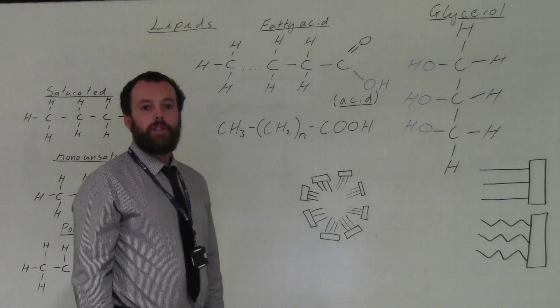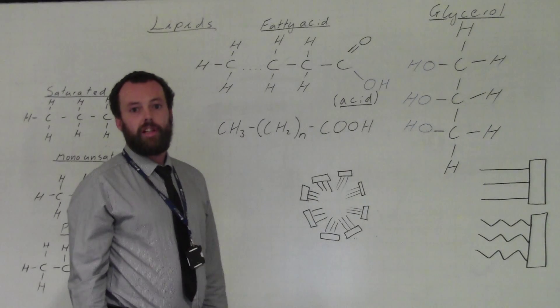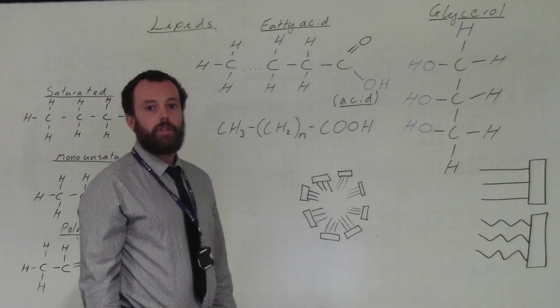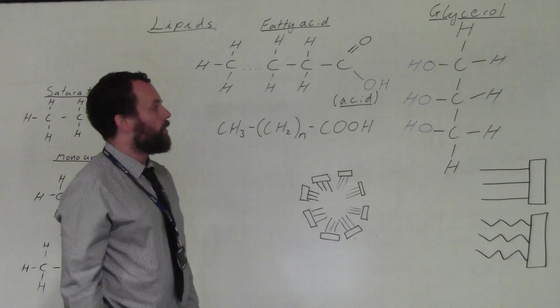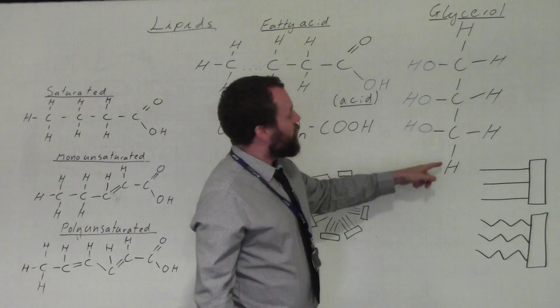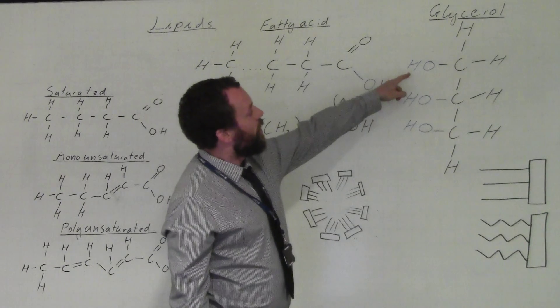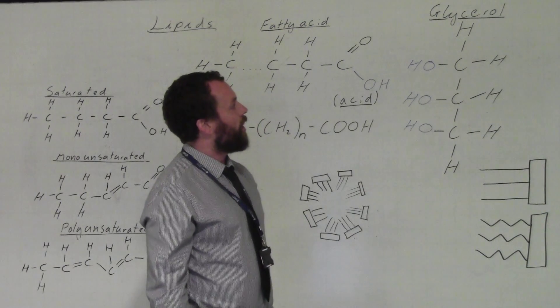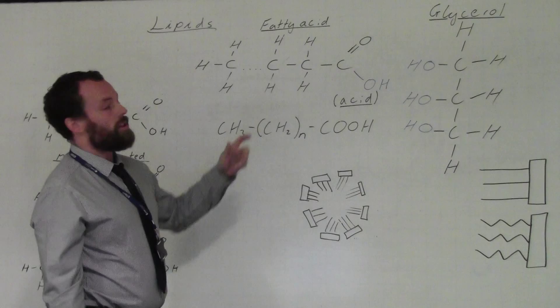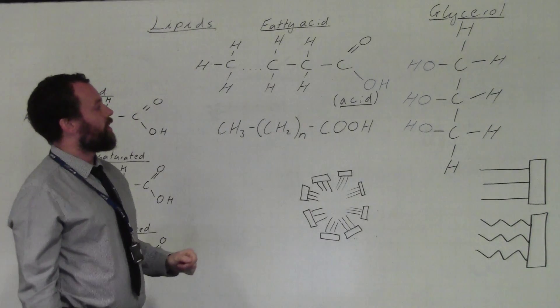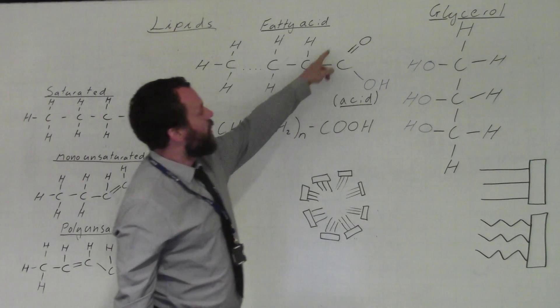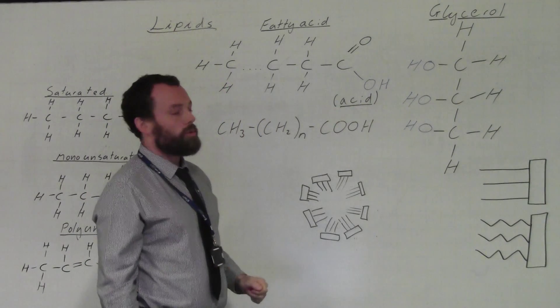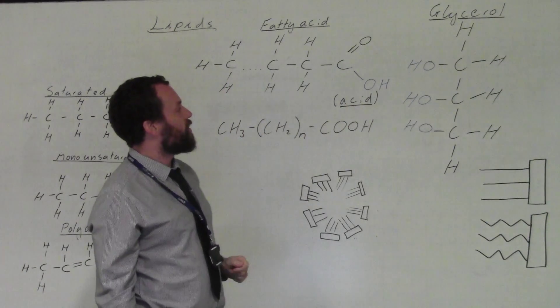This video looks at the formation of lipids, specifically triglycerides, and some of their properties. Lipids are made up of two elements: a molecule of glycerol—notice the OH group down this side—and three molecules of fatty acids. Fatty acids are broken up into two parts: this section here, sometimes referred to as the COO group, which is the acid section, and...